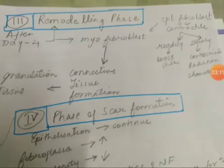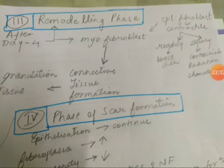The next phase is the remodeling phase. What happens after day four? After day four, fibroblasts become specialized — they become contractile in nature. These are called myofibroblasts. Myofibroblasts are connected to the granulation tissue from the connective tissue. That is the remodeling phase, with myofibroblasts present.